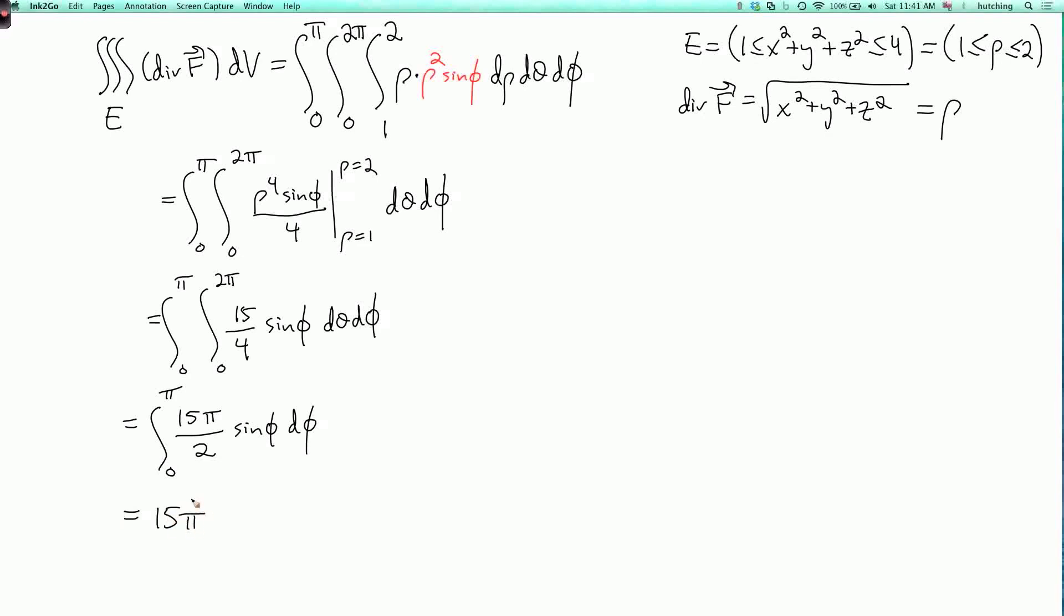And remember the answer that we needed to get was pi plus this. So it's pi plus the triple integral over E of div F dV. So that's pi plus 15 pi, which is 16 pi.